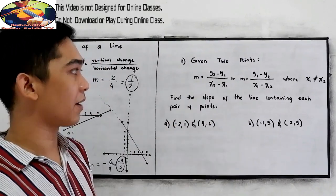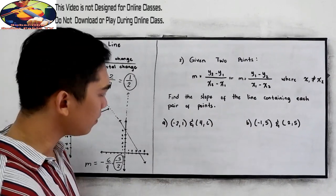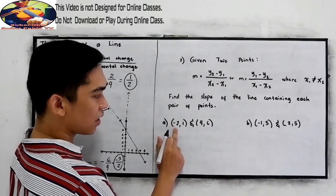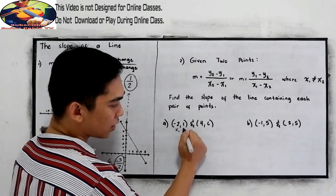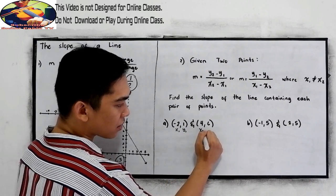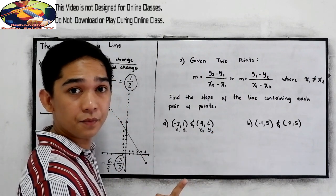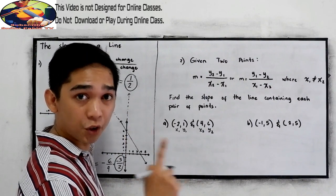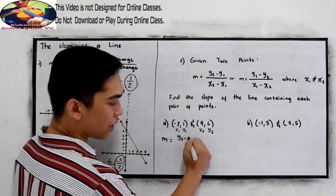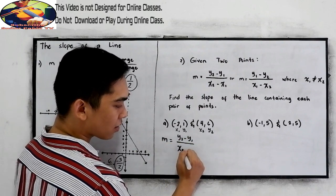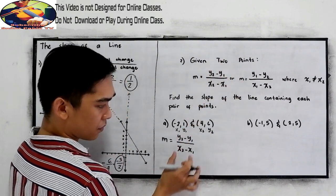Now, let us apply our formula. Find the slope of the line containing each pair of points. Let's say our first point and second point. Let us name it as our x sub 1, y sub 1, x sub 2, y sub 2. First step, write your formula. So m is equal to y sub 2 minus y sub 1 over x sub 2 minus x sub 1. I'm going to use this one.